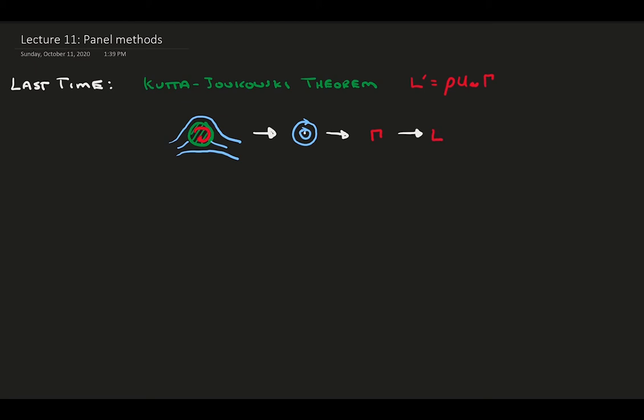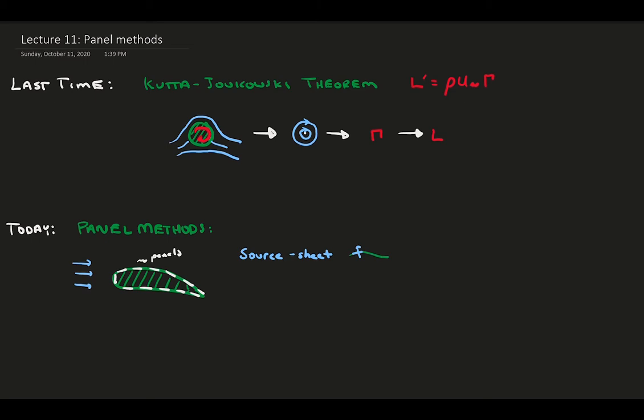Today, we're going to bring the concept of elemental flows into the applied domain and explore panel methods. Panel methods are a way of discretizing arbitrary shapes and applying distributions of elemental flows over a surface to recreate streamline patterns that look like our boundary. Although any elemental flow type works, we will specifically explore source sheets for non-lifting bodies and vortex sheets for lifting bodies. These techniques are primarily computational, meaning we have to use numerical methods to solve the equations. So, let's jump in.